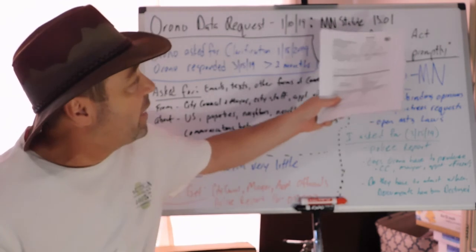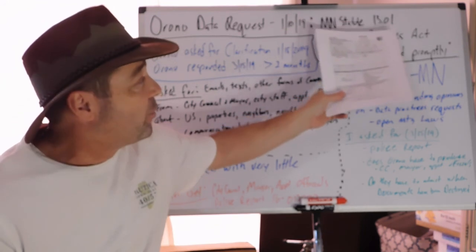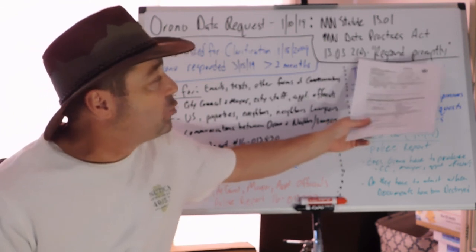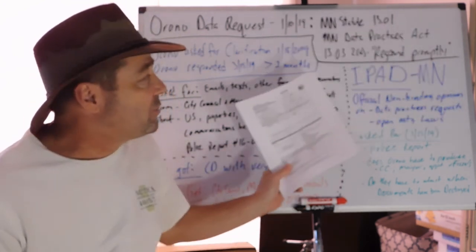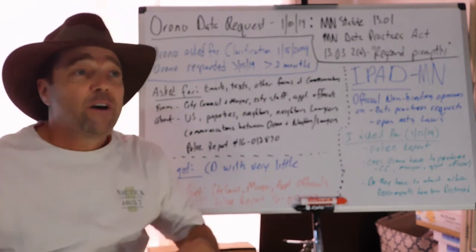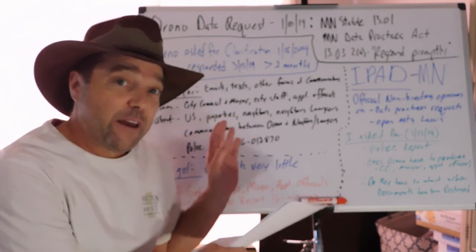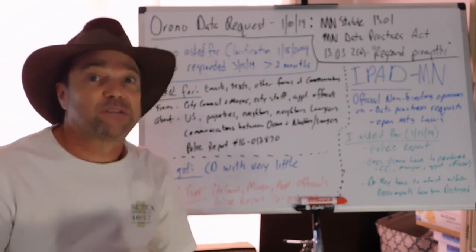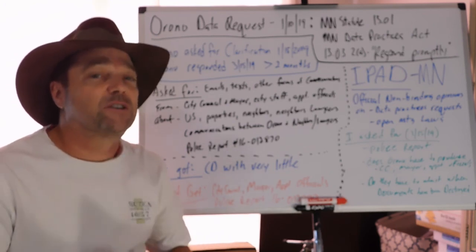Data requests in Minnesota are guided by Minnesota statute 13.01, the Minnesota Data Practices Act, and 13.03 subsection 2a talks about how the government entity has to respond promptly. Remember, you can use this kind of information yourself. Do a little research, find out what your state allows, how your community works, and you can gather information about your situation or about someone else's situation as long as it's public government record and not confidential.